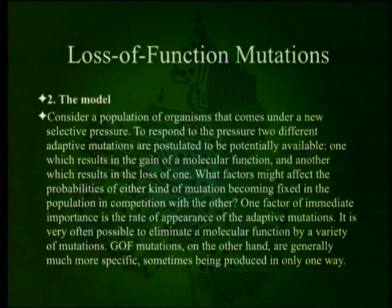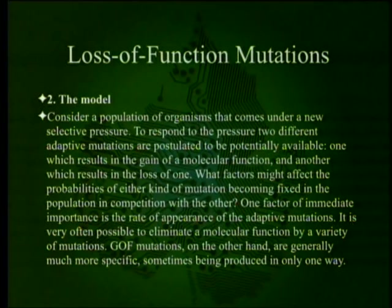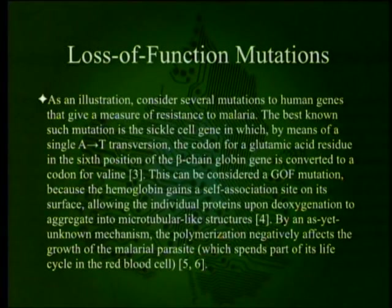The model considers a population of organisms that comes under a new selective pressure. Two different adaptive mutations are postulated to be potentially available: one representing a gain of a molecular function and another resulting in the loss of one. One factor of immediate importance is the rate of appearance of adaptive mutations. It is very often possible to eliminate a molecular function by a variety of mutations. Gain of function mutations, on the other hand, are generally much more specific, sometimes being produced in only one way.